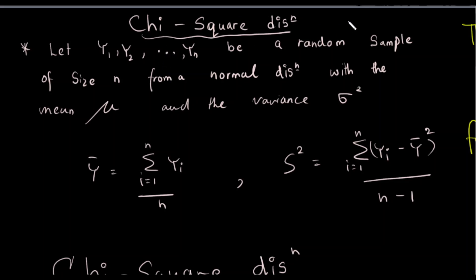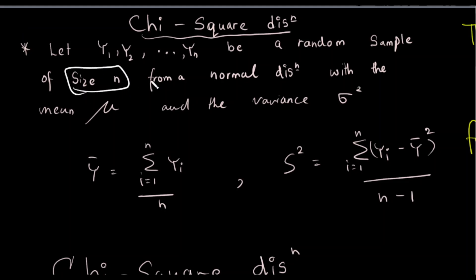In this video, we are talking about chi-square distribution. We are talking about the definitions. We are talking about y1, y2, yn. We are talking about random sample, random sample size, and normal population.